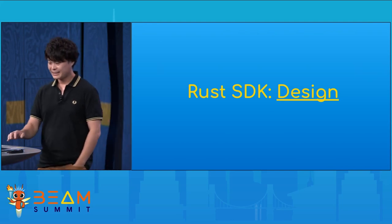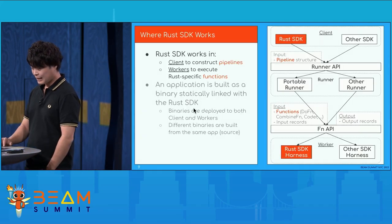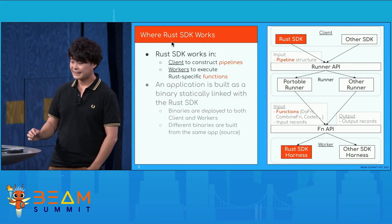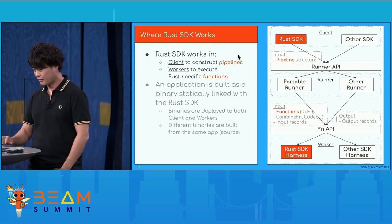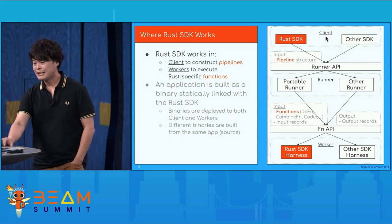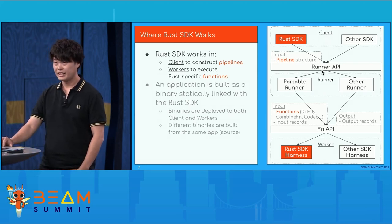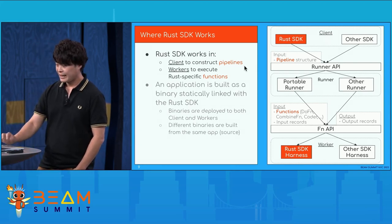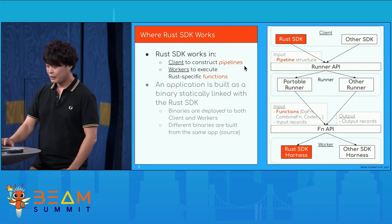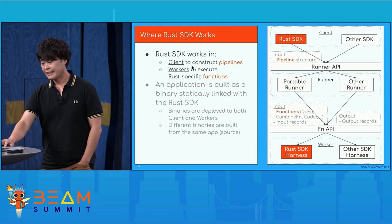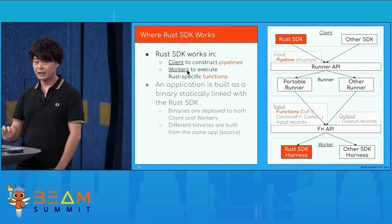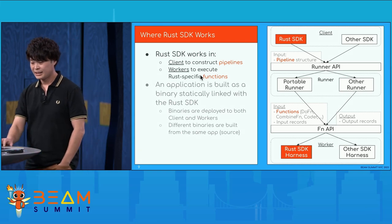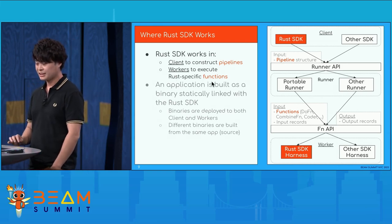For Rust SDK design, first, where does the Rust SDK work? Before the Rust SDK, in Beam we have client, runner, and worker. The Rust SDK works in client and workers. In the client, it constructs pipelines, and on the worker side, it executes Rust-specific functions.